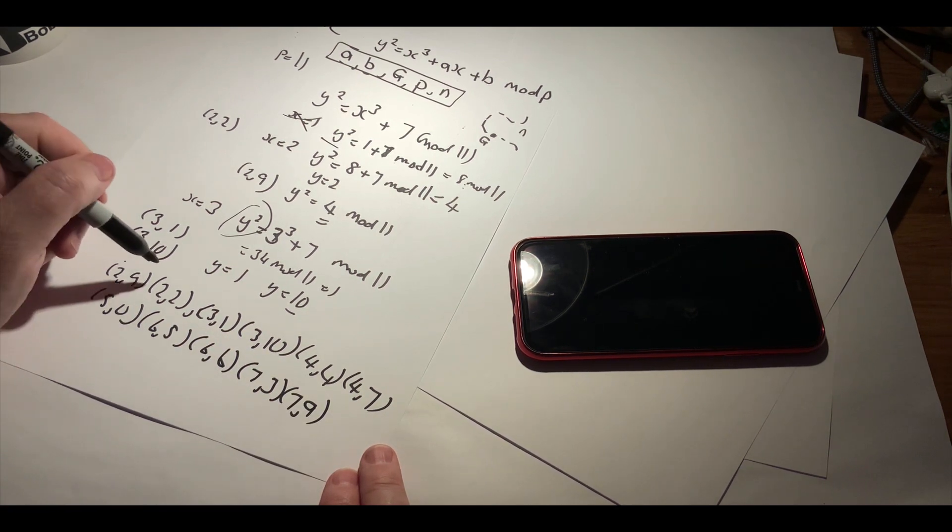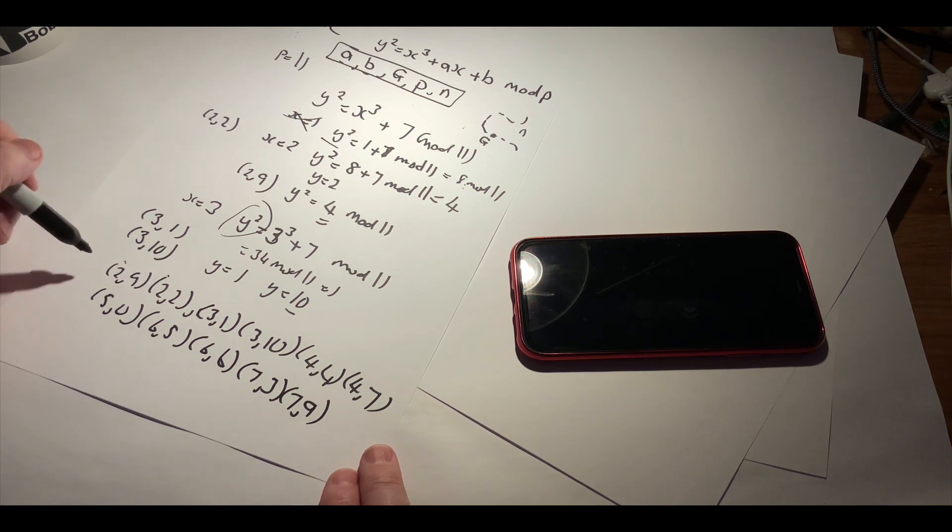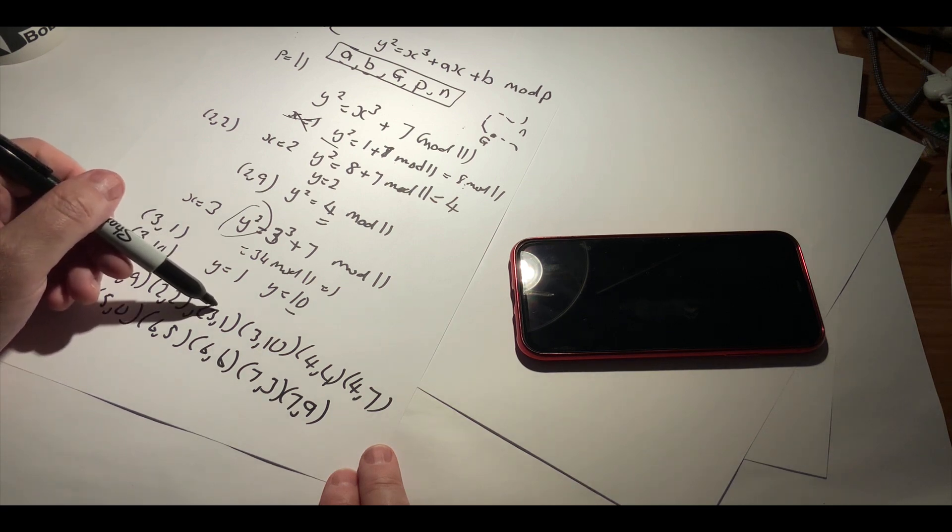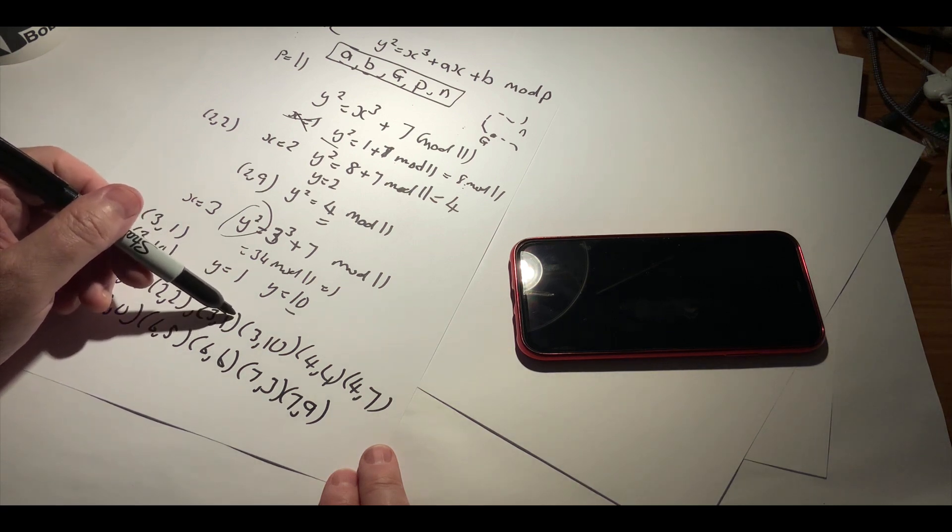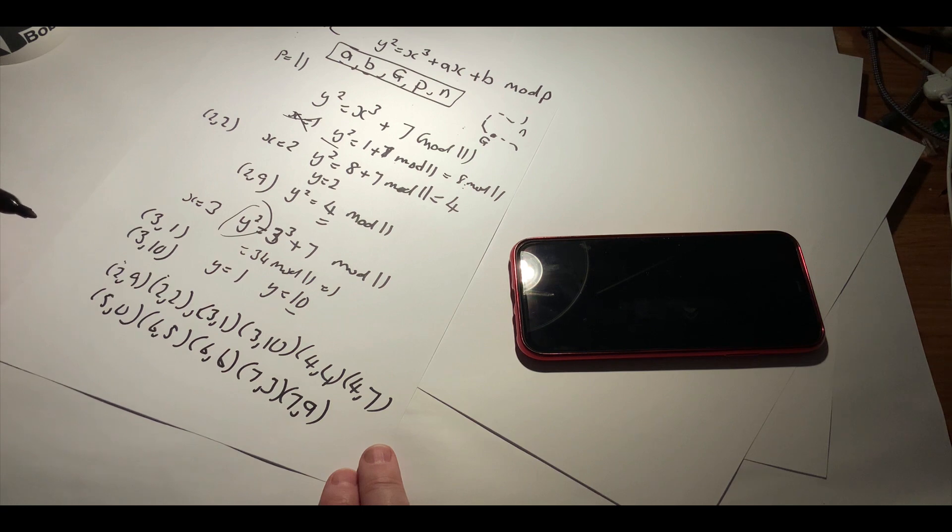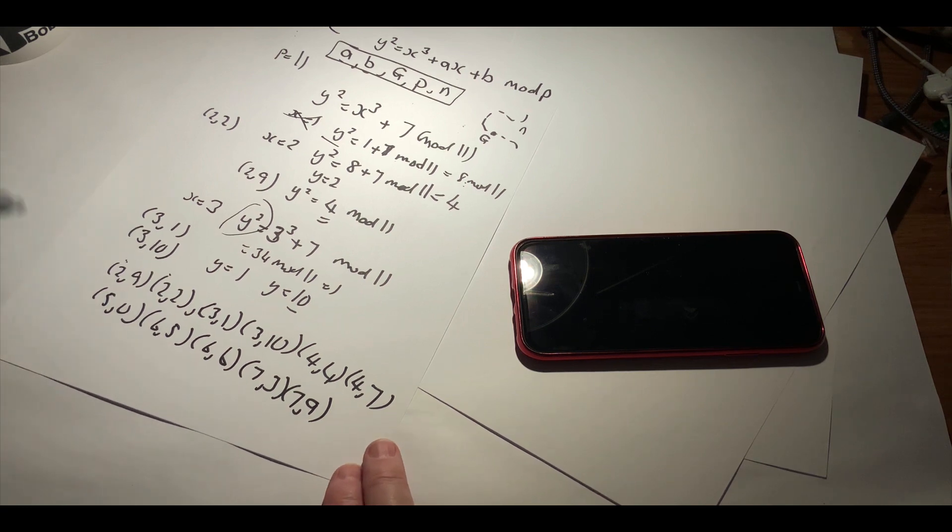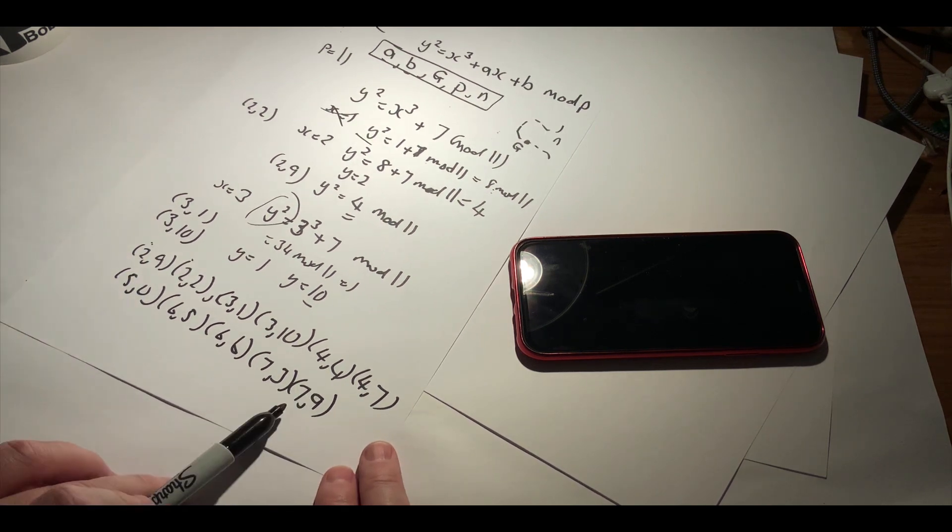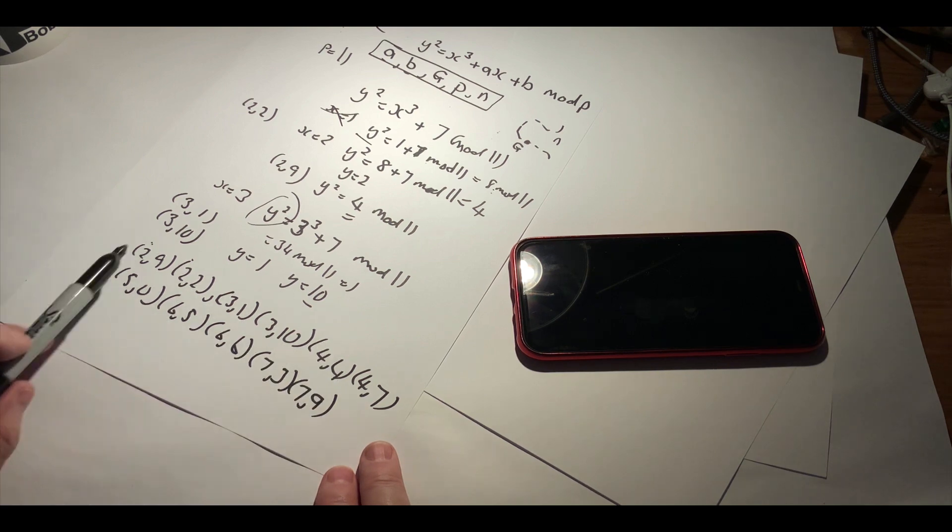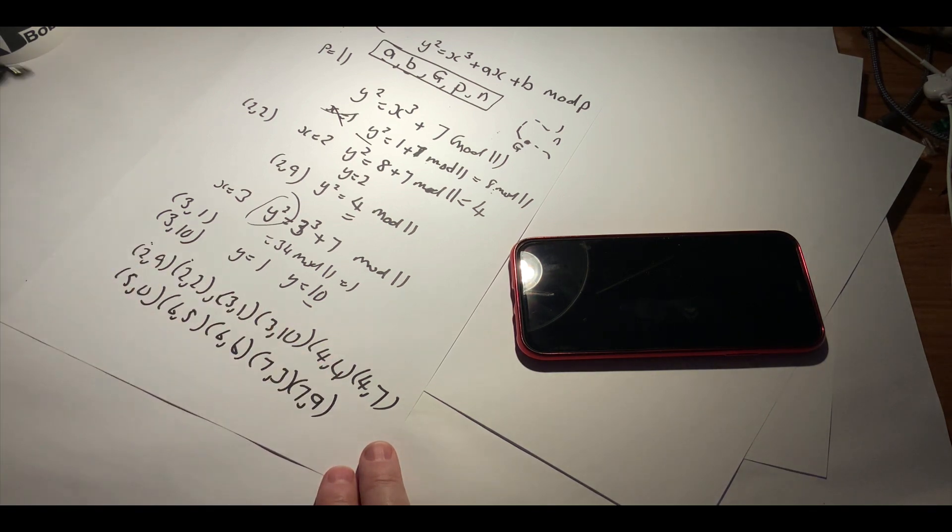We can see whenever we have an x value, it will either give us 9 or 2. An x value of 2 will give us 9 or 2. An x value equal to 3 will give us the result of 1 and 10. So there are some points that don't exist on this curve, but these are the ones that do exist.